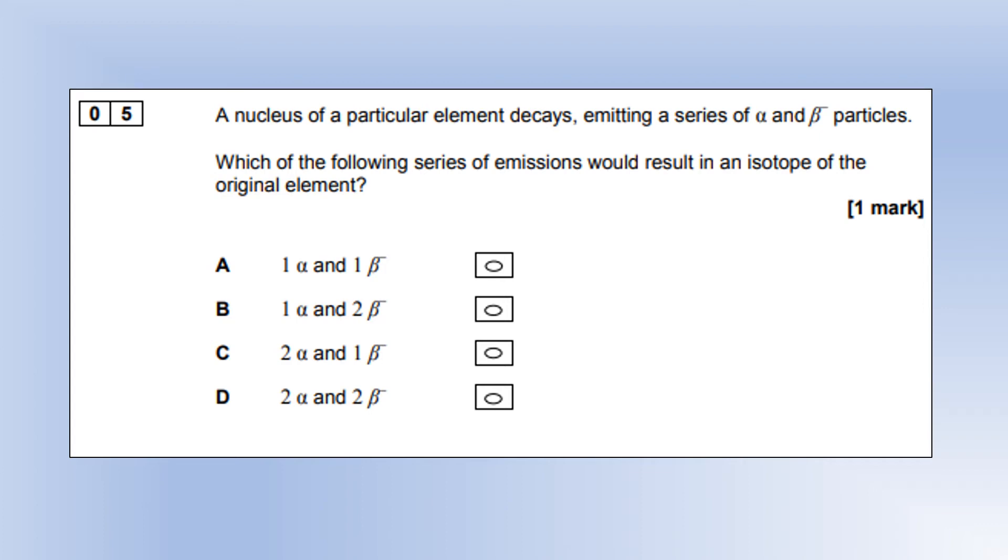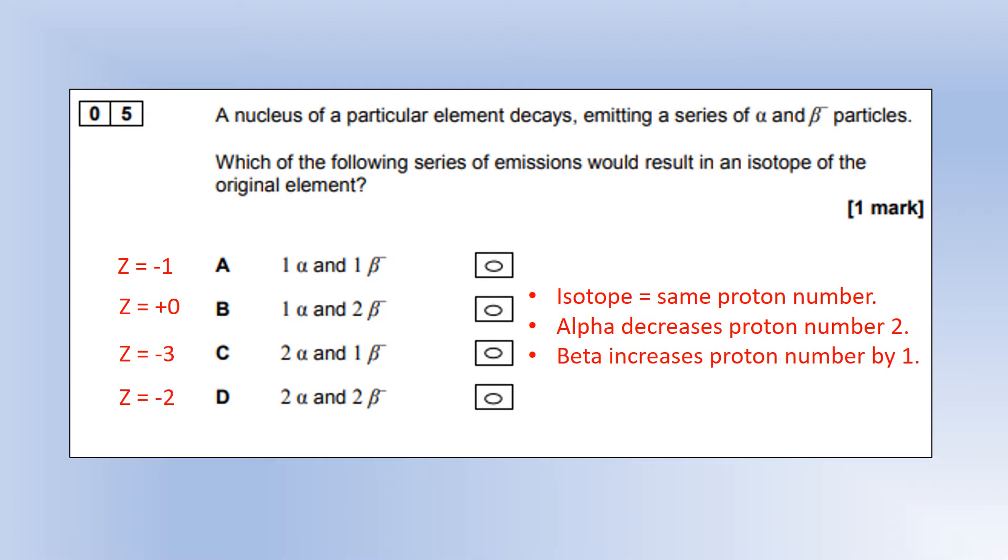The nucleus of a particular element decays, emitting a series of alpha and beta particles. Which series of emissions will result in an isotope of the original element? An isotope means the same proton number. Alpha decreases proton number by two, beta minus increases it by one. So option A decreases proton number by one, option B stays the same, option C decreases by three, and option D decreases by two. The correct answer is B.